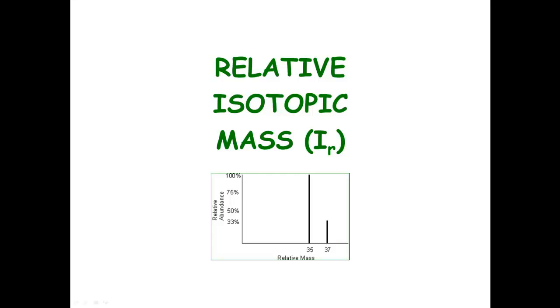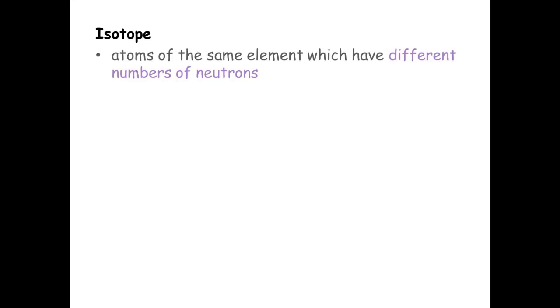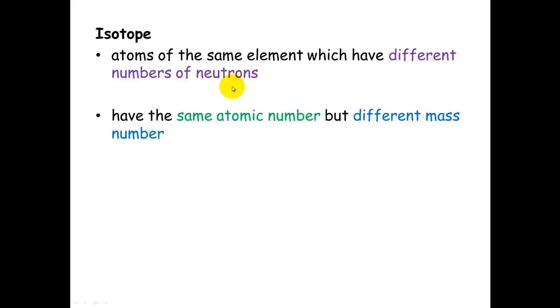Relative isotopic mass. Just as a reminder, isotopes are atoms of the same element which have different numbers of neutrons. They have the same amount of protons, so they have the same atomic number, but they will have a different mass number.